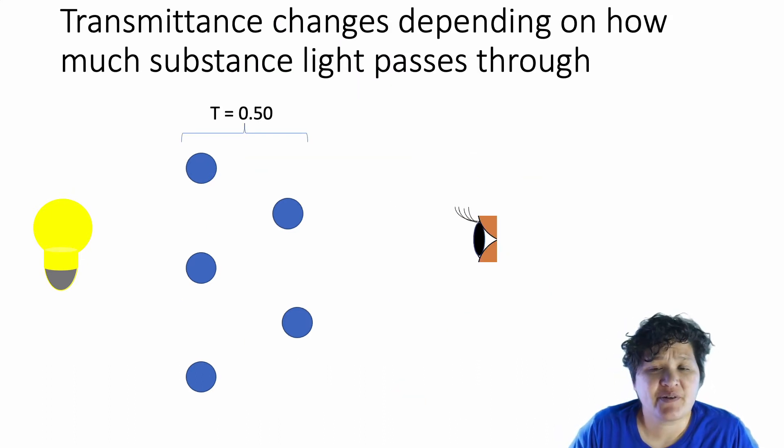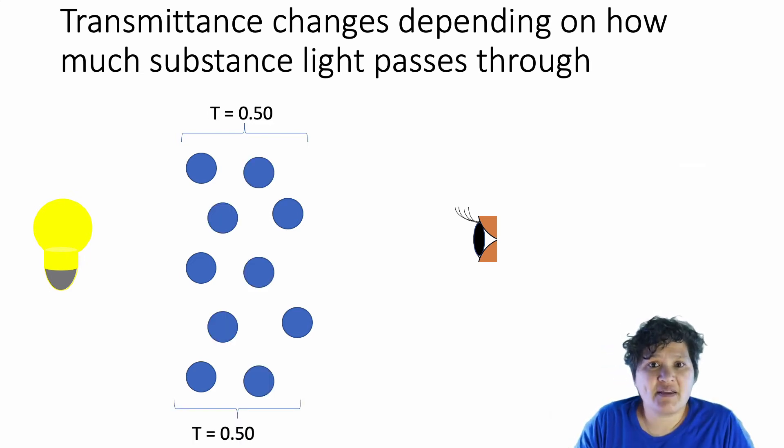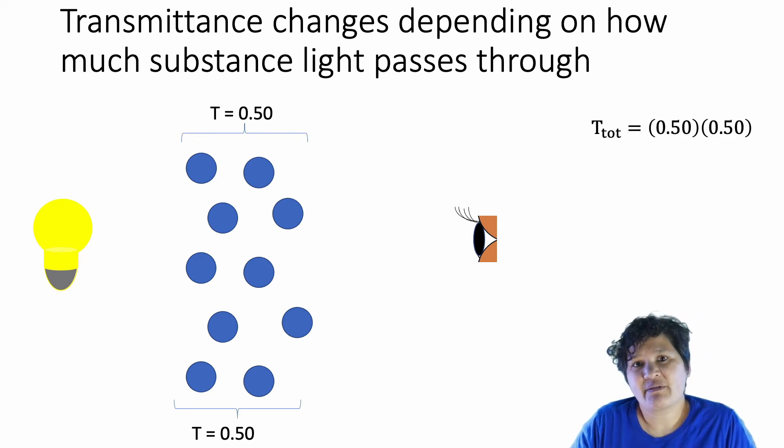So now let's talk about a different scenario. Here we have an aliquot of sample that absorbs 50% of the light. What happens if we put in double the amount of molecules as we did before, but instead of putting them in next to our original aliquot as we did the first time, we're going to put them in the same container. In other words, what if we double the concentration? Now again, this is going to be an exponential relationship. The first set of molecules has a transmittance of 0.50, while the second set of molecules also has a transmittance of 0.50. So our total transmittance is 0.50 squared. So you can see there are a couple of factors that affect transmittance exponentially.